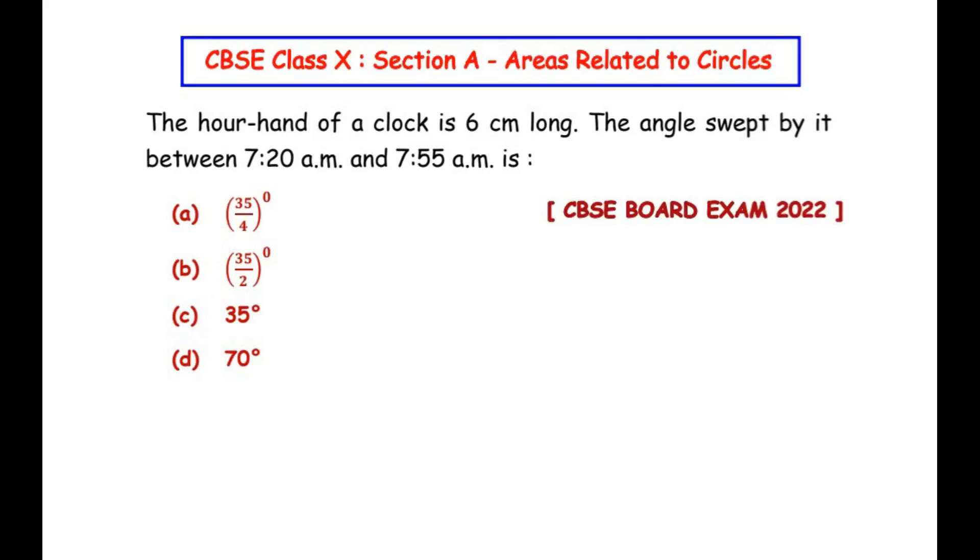We can see that there are four options given. Now let us try to understand the question by using a rough figure first. Here a clock is shown and you can see there is 12 o'clock, 3 o'clock, 6 o'clock, and 9 o'clock, and here 7 o'clock is also shown in red.